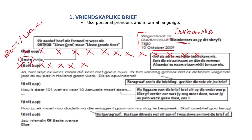Then you leave another line and start with your introductory paragraph. What should you have in this paragraph? You should be telling us why you're writing this letter, and it can be as informal as you want, but no English words please. So for example, Elisa is telling Anya: 'Hier skryf ek weer, maar dié keer met goeie nuus. Ek het vandag gehoor dat ek definitief volgende jaar as au pair in Holland gaan werk — dit is so opwindend!' So why is she writing? She's telling Anya she's writing again, this time with very good news — she's definitely going to be working in the Netherlands as an au pair and she's so excited. The letter is going to be about working as an au pair in Holland.